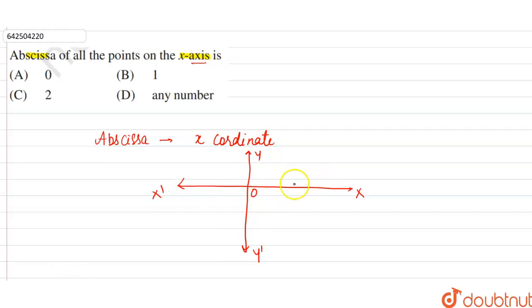So we can say it can be any number, either 0, 2, 1. We can say that the correct option is option D. As 0 also lies on the x-axis, 1, 2, and all the positive integers or any number lie on the x-axis, so option D is the correct option.